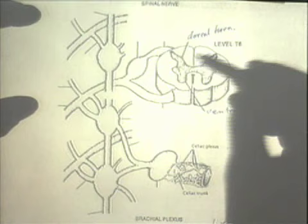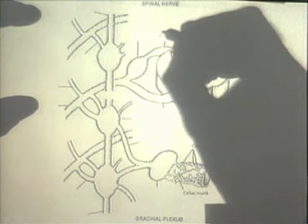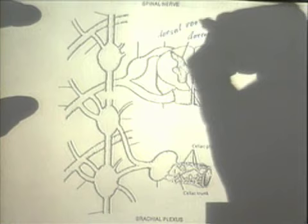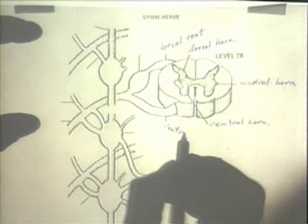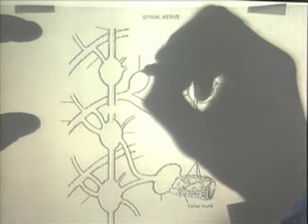Here, coming out of the spinal cord, you have the dorsal root. And here we can see the ventral root, and here we have the dorsal root ganglion.